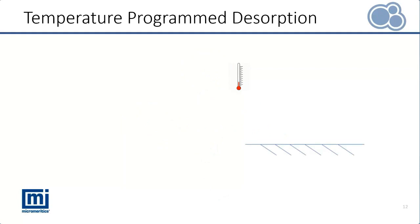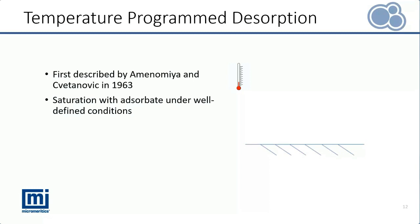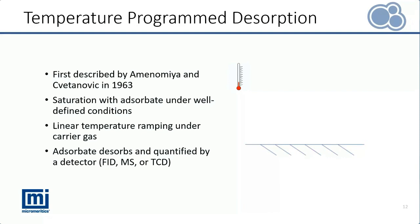The temperature program desorption was first described by Eminomiya and Sivetanovic in 1963. As for the experimental procedure: first, saturation of the surface of a sample with an adsorbate under well-defined conditions is required, followed by linear temperature ramping under a carrier gas. The adsorbate desorbing as the temperature increases is quantified by a detector such as FID, mass spec, or thermal conductivity detector. All the TPD data shown in this webinar were analyzed on the Micromeritics AutoChem 3, which is equipped with a TCD detector.